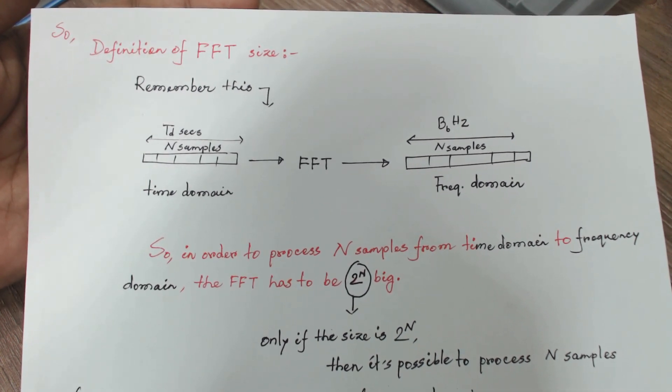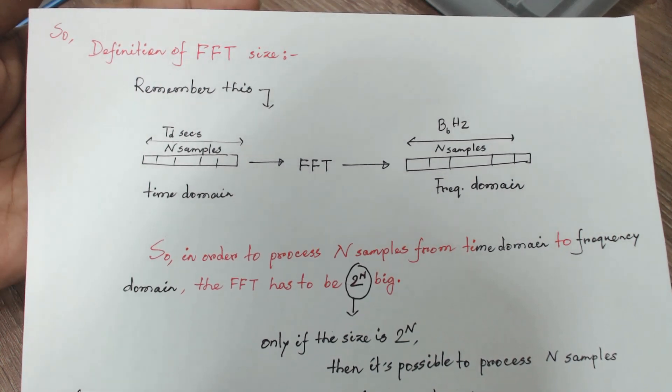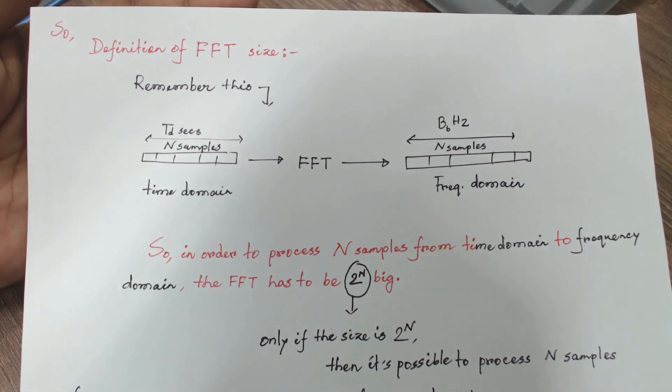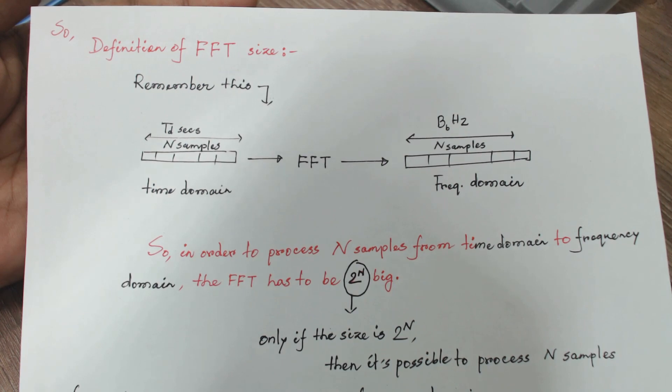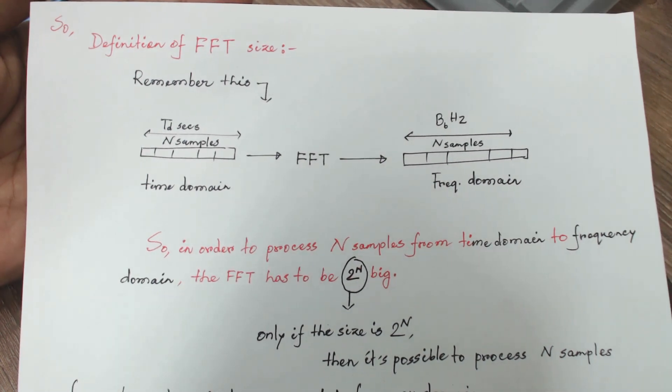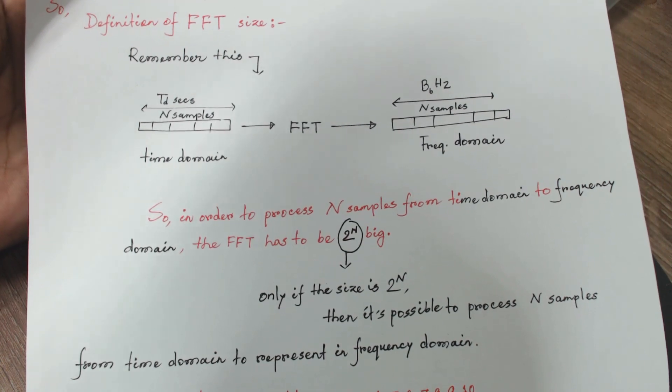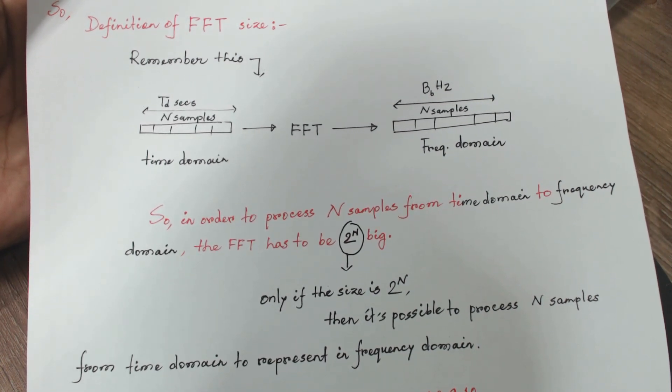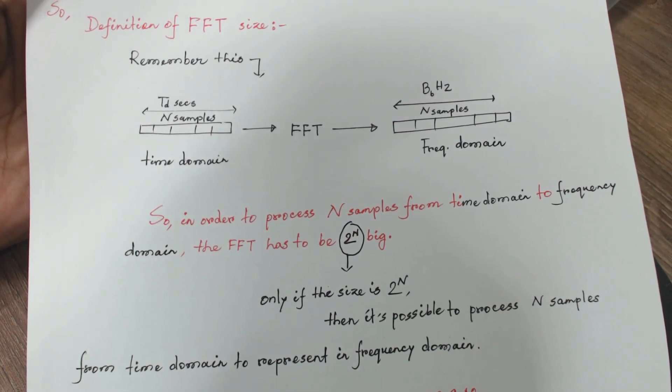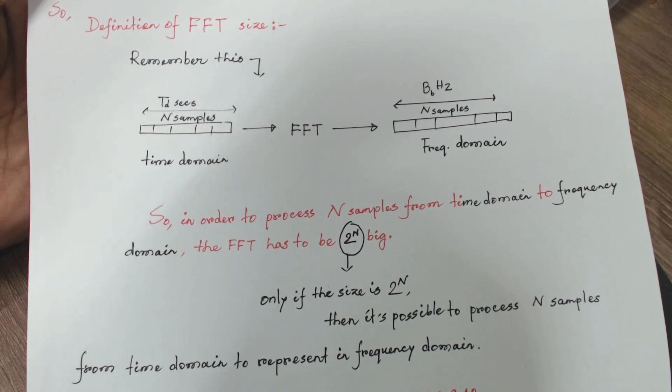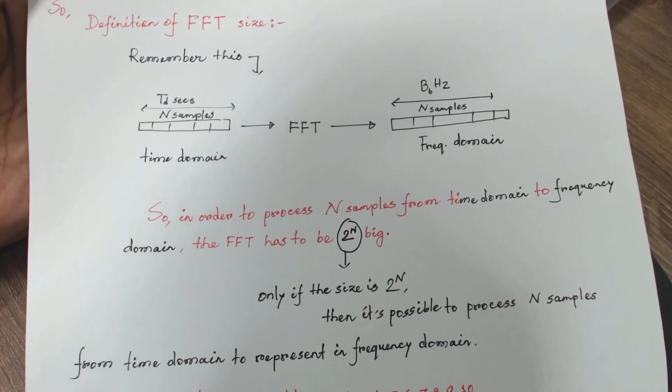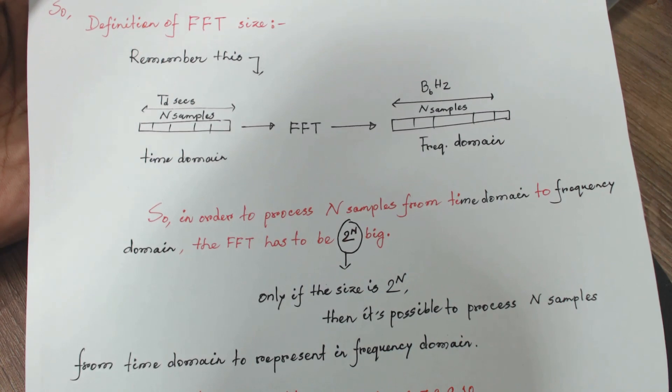FFT is the process. From this picture you can actually see I tried to explain that one in picture. So what FFT size is, in order to process N amount of samples from time domain to frequency domain, the FFT has to be 2 to the power N big.